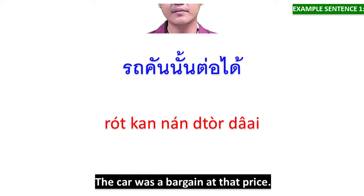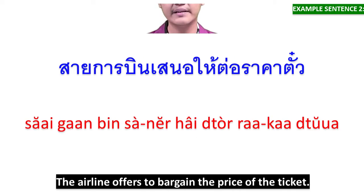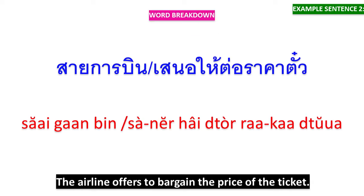ประทาคานต่อได้ — the car was bargained at the price. สายการบิน เสนอ ให้ต่อราคาตั๋ว — the airline offers to bargain the price of the ticket.